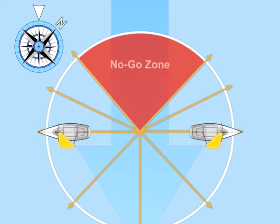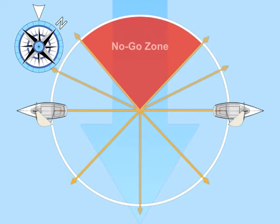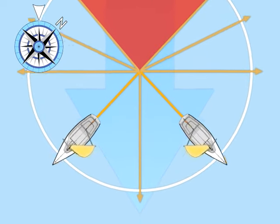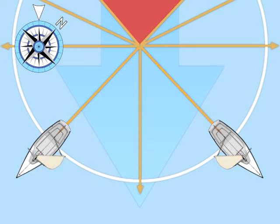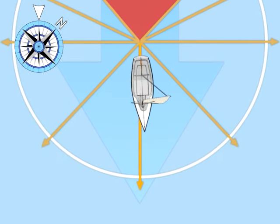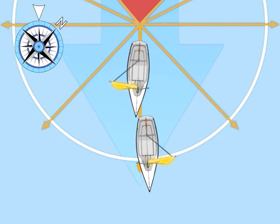Beam reach, where you're sailing roughly 90 degrees to the wind. Broad reach, which is any downwind angle between beam reach and a run. And the run, where the boat is traveling in the same direction as the wind.